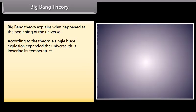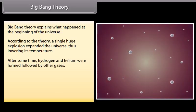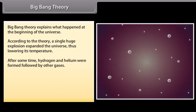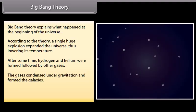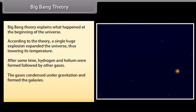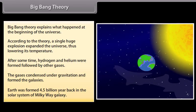Big Bang Theory explains what happened at the beginning of the universe. According to the theory, a single huge explosion expanded the universe, thus lowering its temperature. After some time, hydrogen and helium were formed, followed by other gases. The gases condensed under gravitation and formed the galaxies. Earth was formed 4.5 billion years back in the solar system of Milky Way Galaxy.